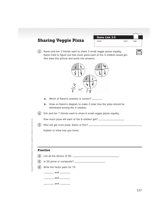So let's go ahead and read the story problem for number one. It says, Karen and her three friends want to share three small veggie pizzas equally. Karen tried to figure out how much pizza each of the four children would get. She drew this picture and wrote two answers. Which of Karen's answers is correct? A and B. Draw on Karen's diagram to make it clear how the pizza should be distributed among the four children.